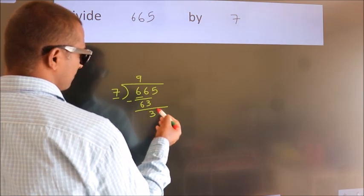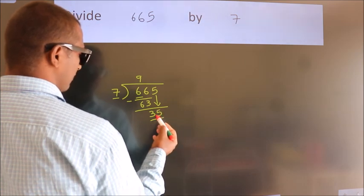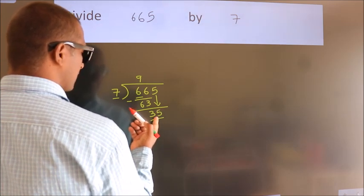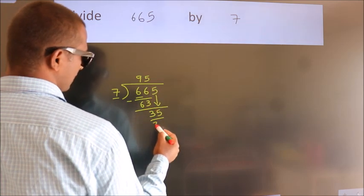After this, bring down the beside number. So 5 down. So 35. When do we get 35? In 7 table, 7 fives, 35.